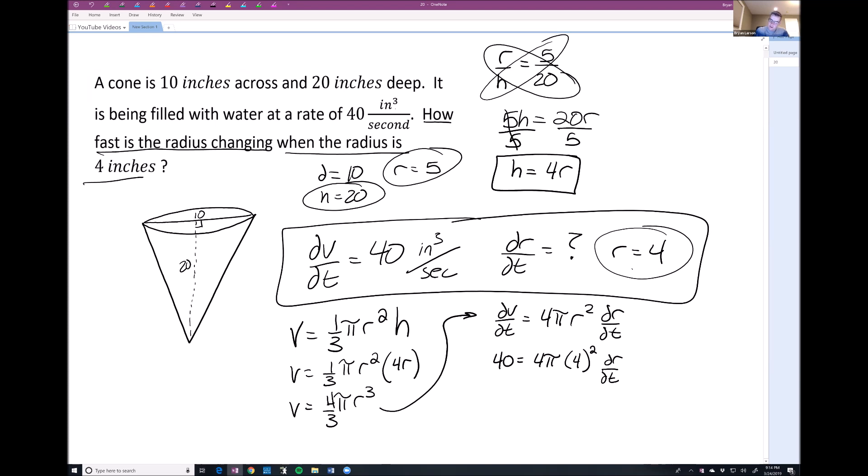Okay, well, if I do this out here, 40 equals 4 squared would be 16. 16 times 4 would be 64 pi dr/dt. And then to get dr/dt by itself, we simply divide by 64 pi.